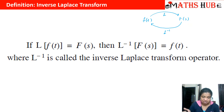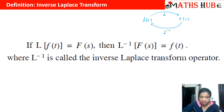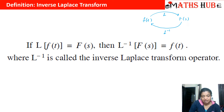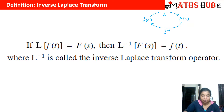If the Laplace transform of f(t) is F(s), then applying inverse Laplace to F(s) gives inverse Laplace of Laplace of f(t). Since inverse Laplace and Laplace are inverse operators, they cancel out and you get back f(t). So L is called the Laplace transform operator and L inverse is called the inverse Laplace transform operator.